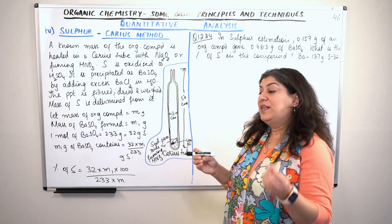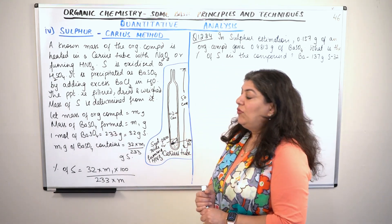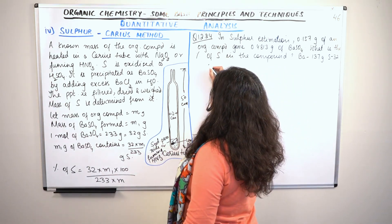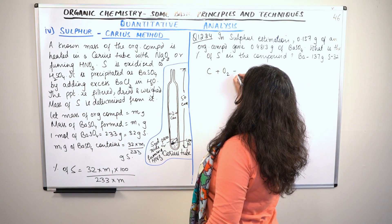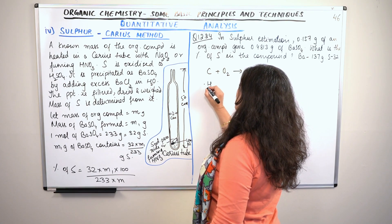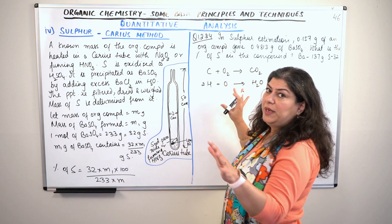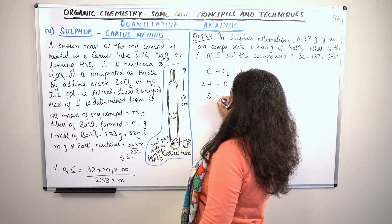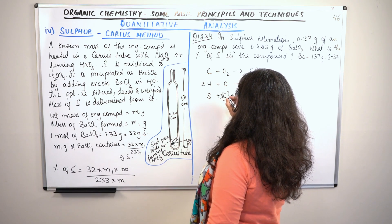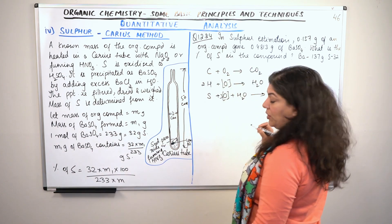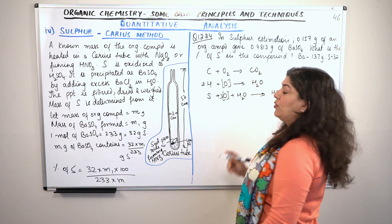The oxygen provided by nitric acid or sodium peroxide will be used up by the sulfur present in the organic compound. If the compound contains carbon and hydrogen, the carbon gets oxidized to carbon dioxide and the hydrogen gets oxidized to water, both of which are lost. The sulfur combines with the oxygen provided by nitric acid to form H₂SO₄, that is sulfuric acid.